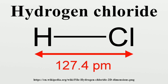The acid dissociation or ionization constant Ka is large, which means hydrogen chloride dissociates or ionizes practically completely in water. Even in the absence of water, hydrogen chloride can still act as an acid.